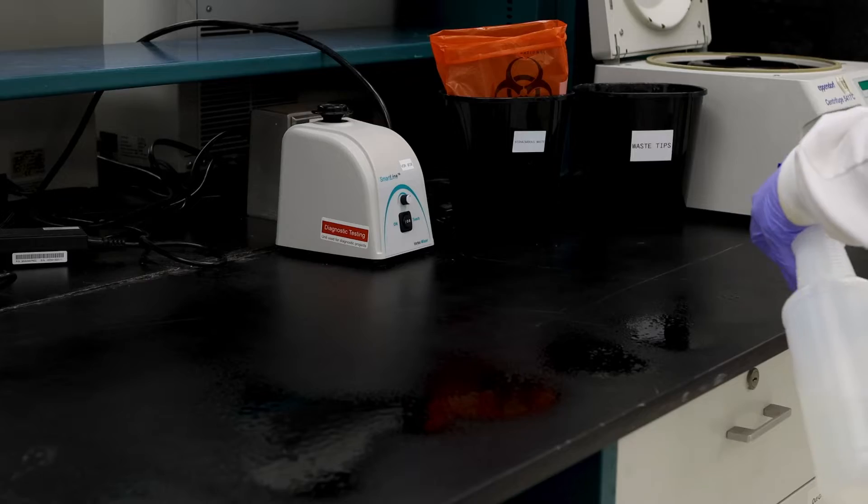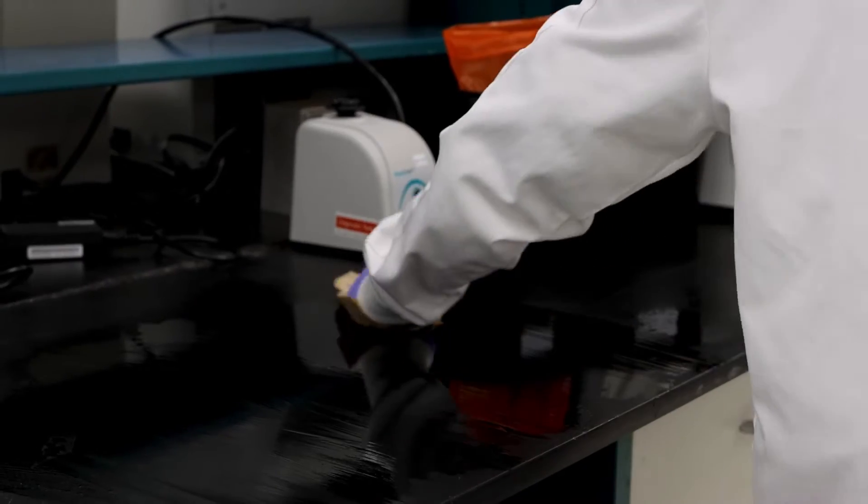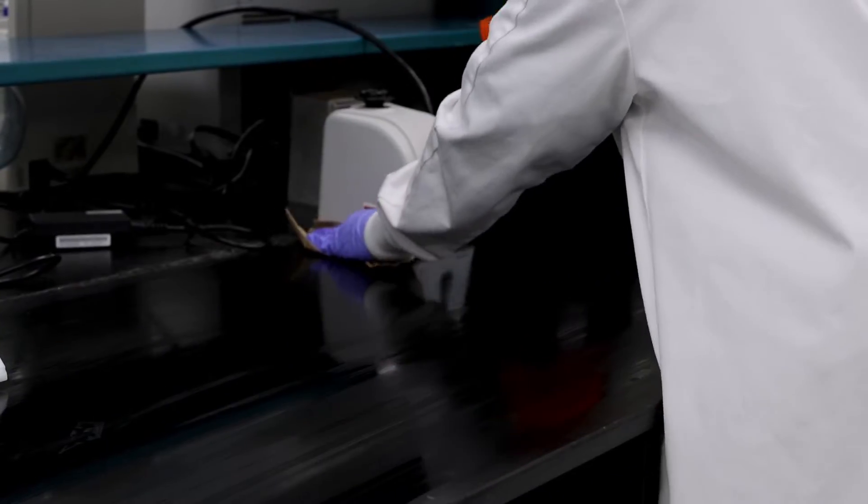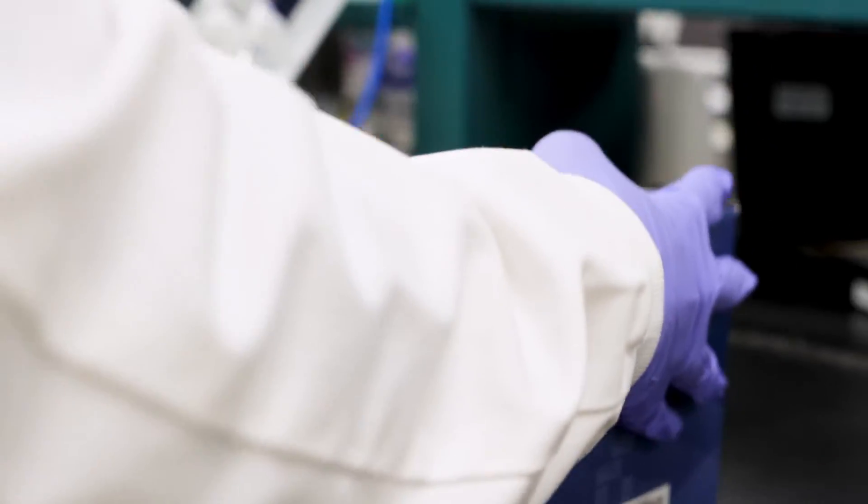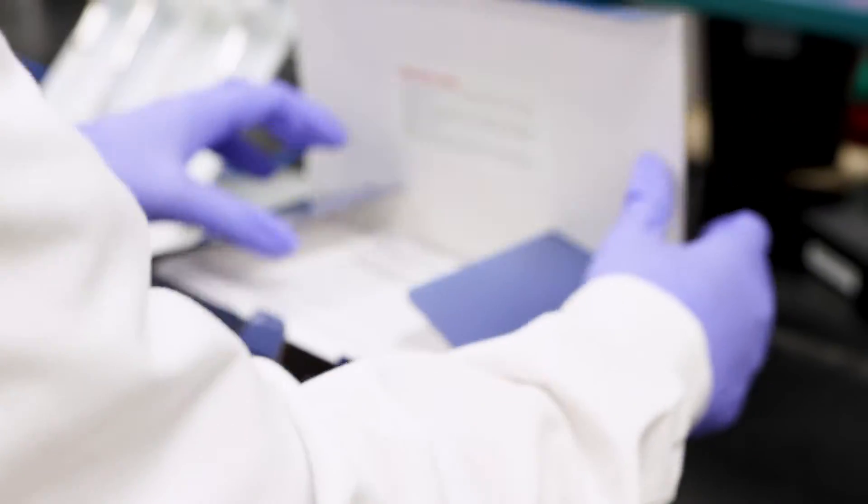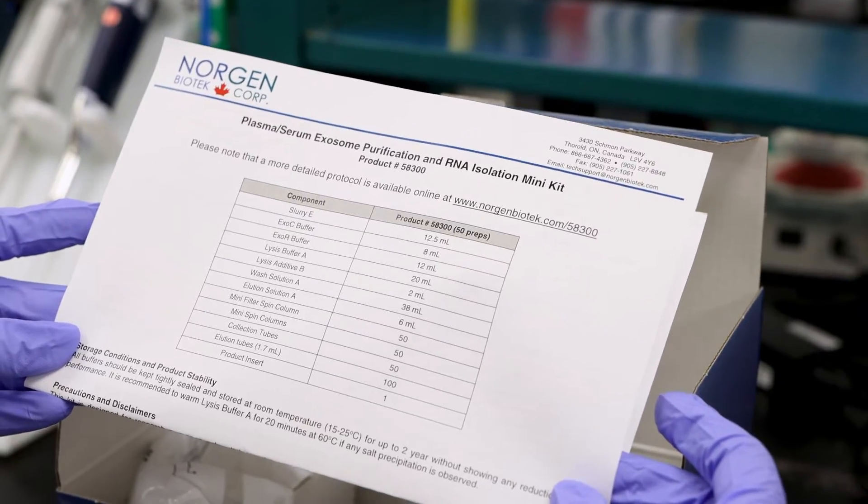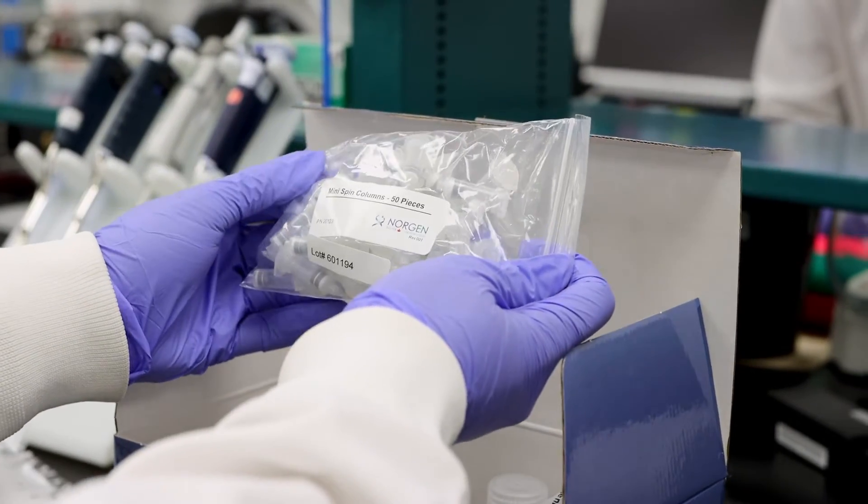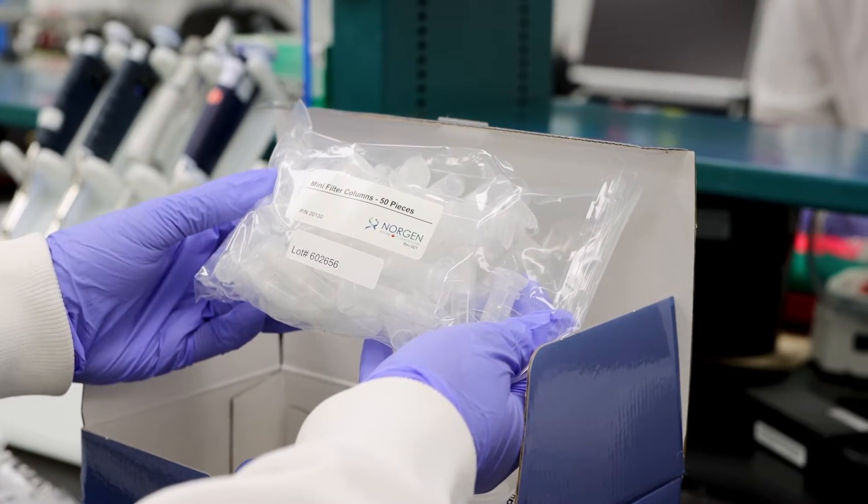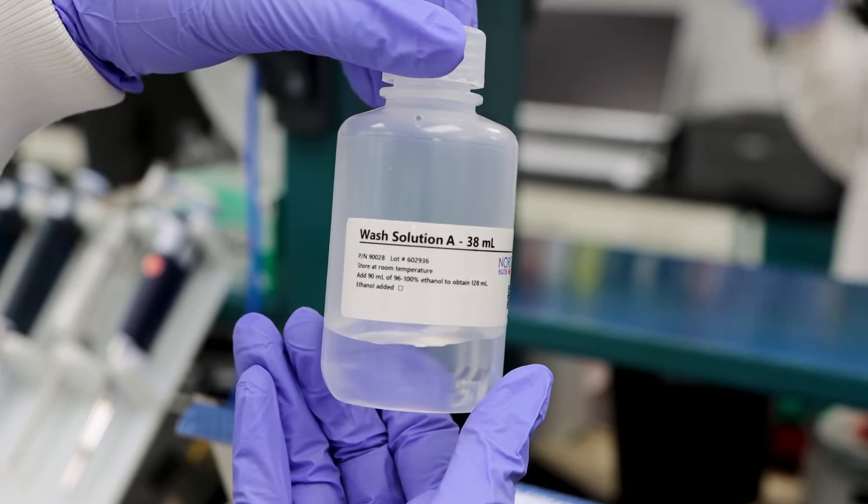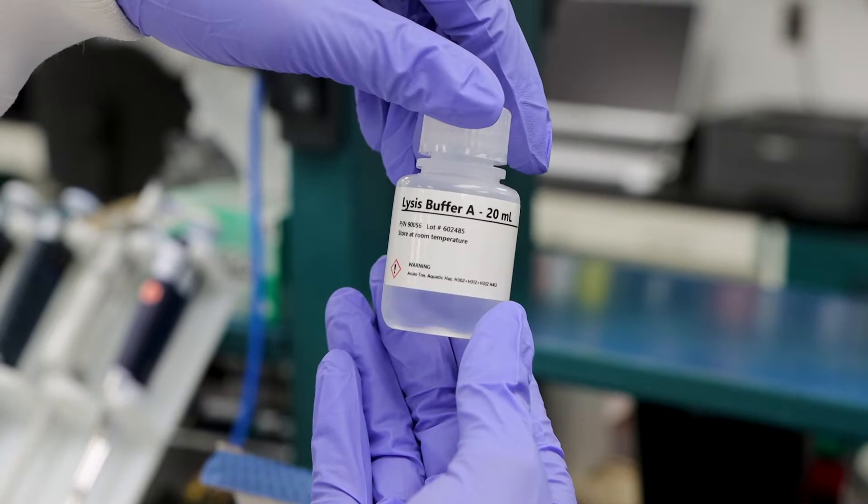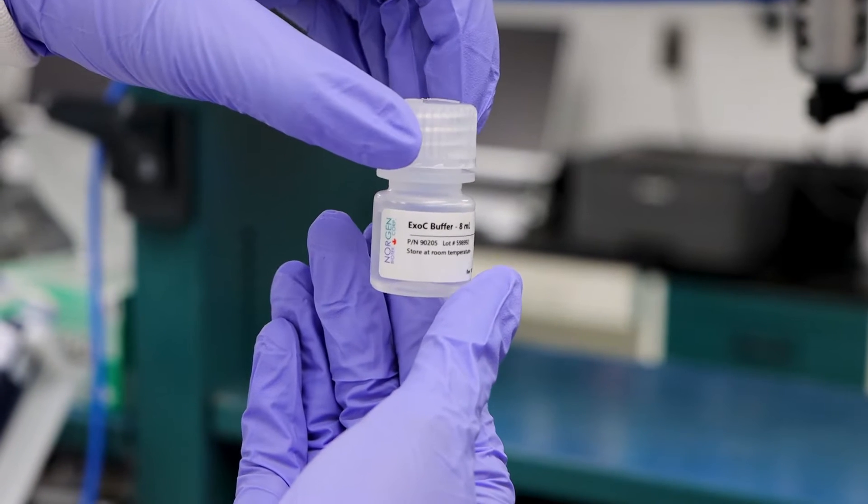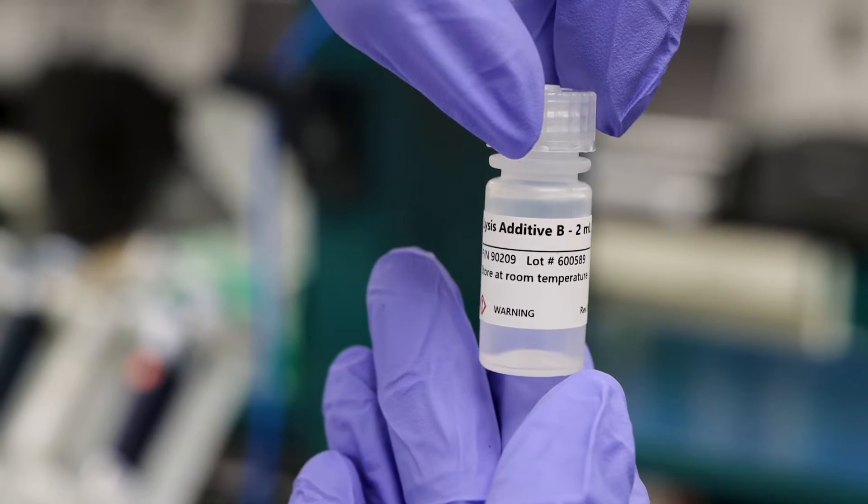As always before you begin, sterilize your workspace and instruments with 70% ethanol followed by 1% bleach. Upon opening the kit, you will find a detailed product insert, 1.7 ml elution tubes, mini spin columns, mini filter spin columns, wash solution A, slurry E, lysis buffer A, exo R buffer, elution solution A, exo C buffer, and lysis additive B.